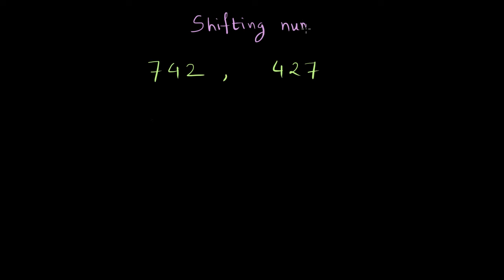Let's say we have two three-digit numbers, 742 and 427. It's quite evident that in both numbers, the digits are the same—2, 4, and 7—which are arranged differently. Usually what we do is when we have similar digits but different numbers formed out of them, we try to compare those numbers. This is basically what we do in shifting numbers. Our objective is to compare these numbers to find which is larger. Let's see how we can do this.